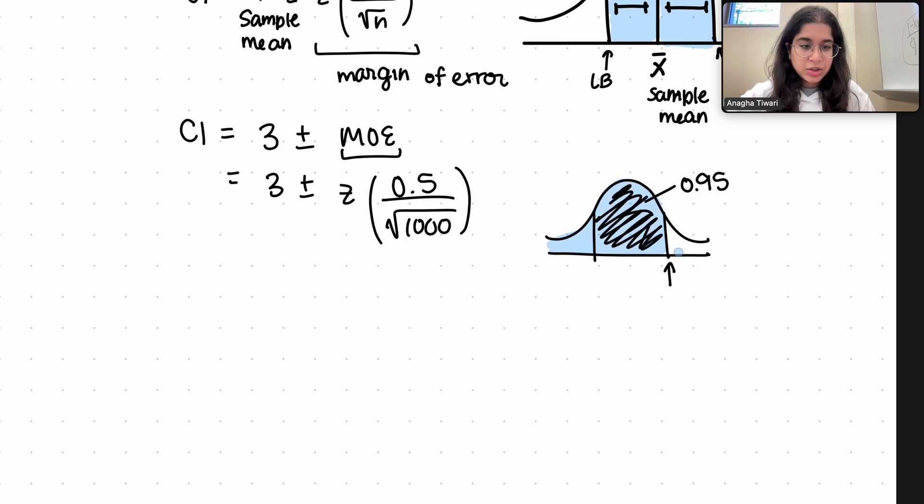We need to input all of the area to the left. Because if we want this z score, the input for norm.ppf should be the entire area starting from the very beginning of the bell curve to the z score you want to find. So here if this middle area is 95%, we know that each of these ends will be 0.025.